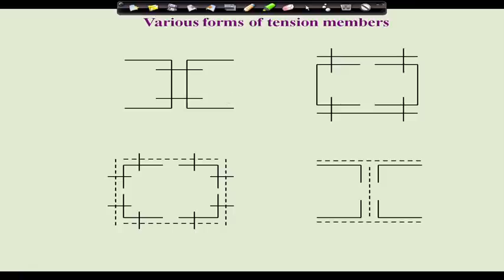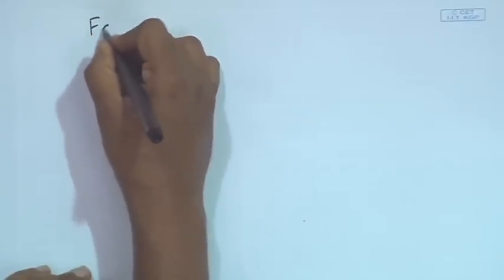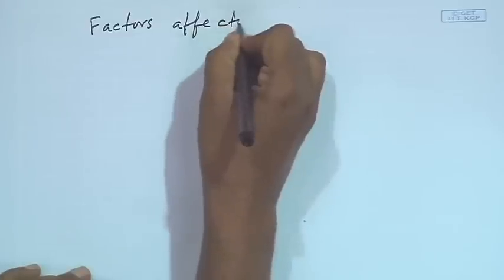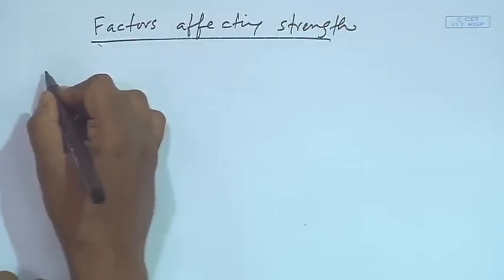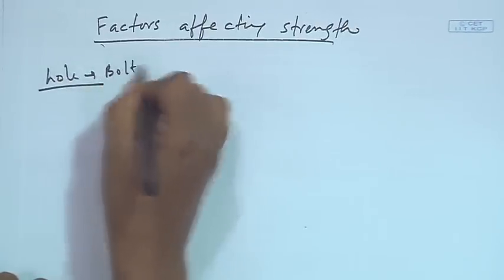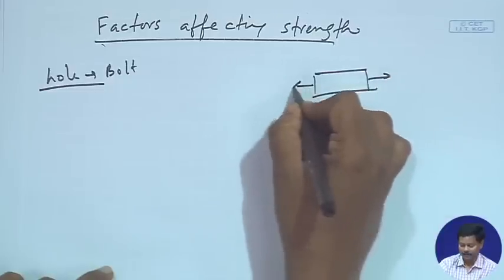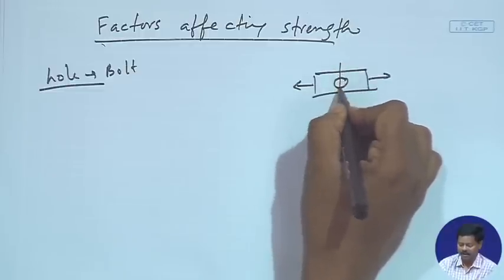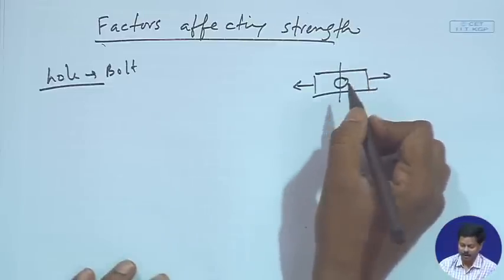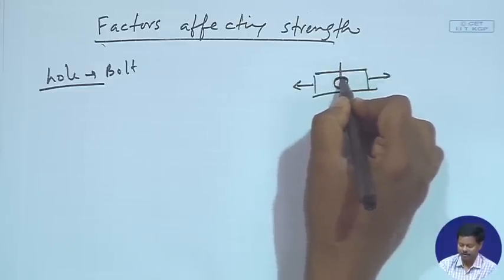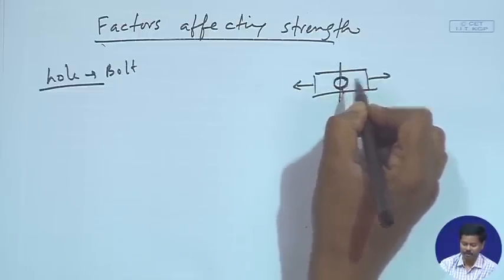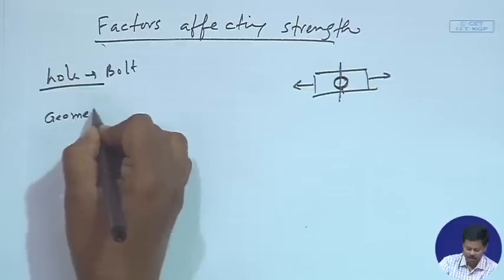Now we will discuss various factors affecting the strength of tension members. First is the bolt hole. If we have a plate and make a connection with a hole, then the net area of the section is going to be reduced. When calculating the tensile strength, we have to reduce the bolt hole area because this bolt hole cannot take tension. Therefore, the strength will be decreased in the presence of holes.